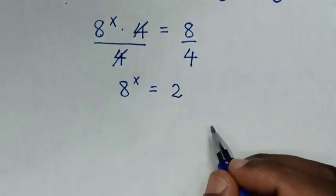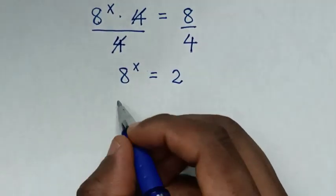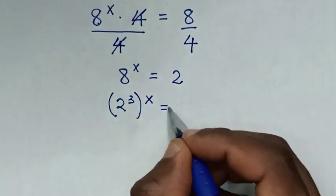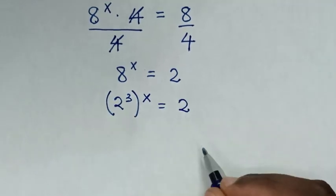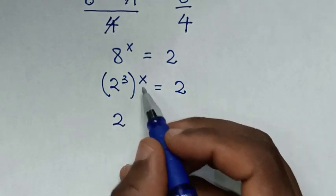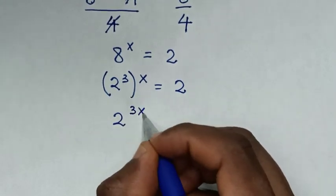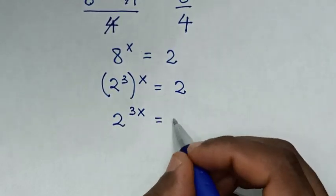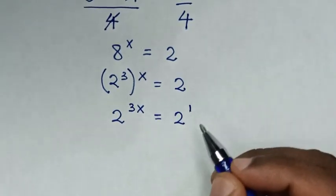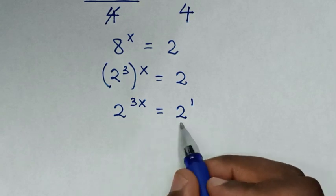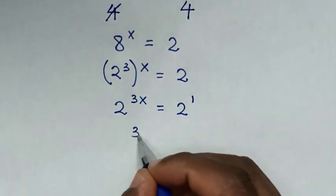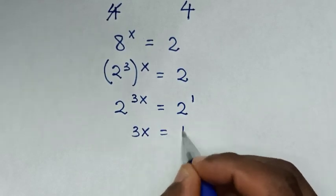Then from here, 8 is the same as 2 power 3, so bracket power x is equal to 2. Then it will be 2 power 3x is equal to 2. Then this 2 is the same as 2 power 1. Now we have the same base of 2, so we compare these powers. It will be 3x is equal to 1.